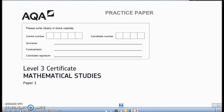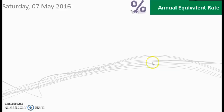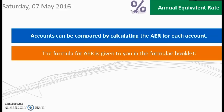So let's start by looking at the AER, the annual equivalence rate. Accounts can be compared by calculating the AER for each account, so it's a way of comparing the interest over the course of a year. The formula for AER is given in the formula booklet and it looks like this.